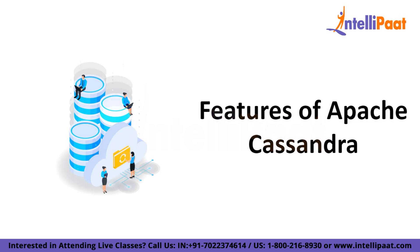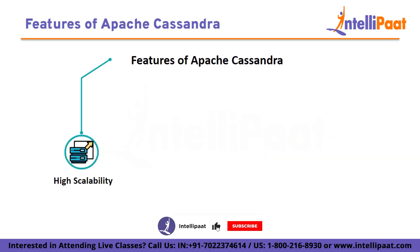The next topic is features of Apache Cassandra. The first one is high scalability. Adding nodes to a Cassandra cluster is easy and available at any time as you need to grow. Instead of growing vertically, Apache Cassandra is meant to grow horizontally across many geographical sites as needed.